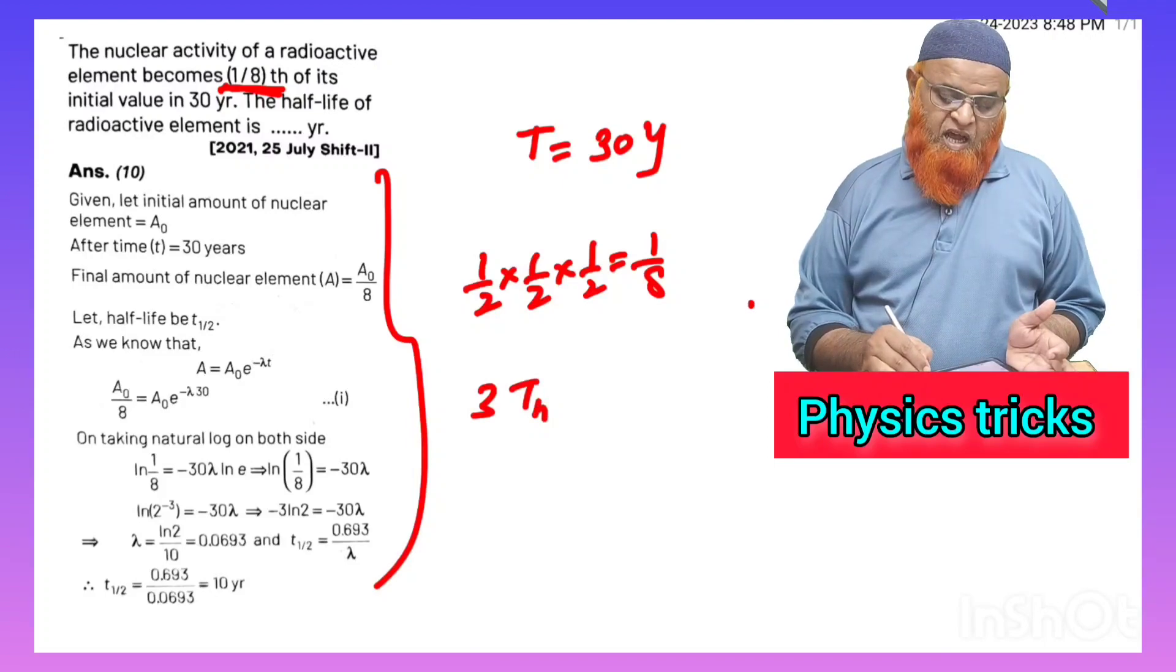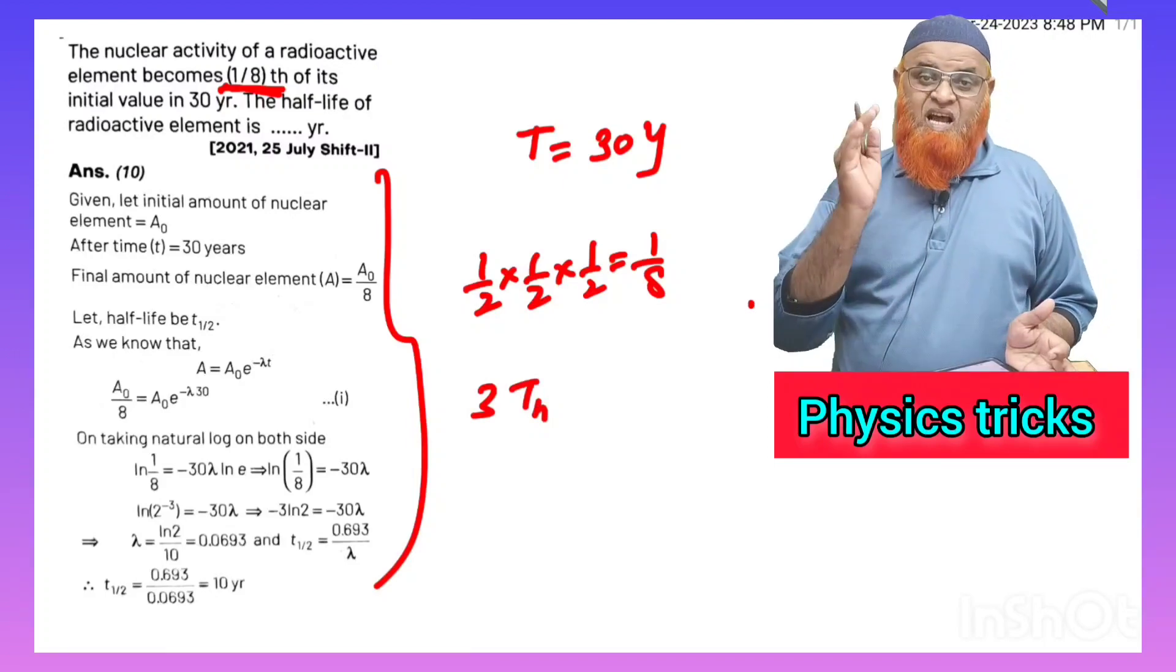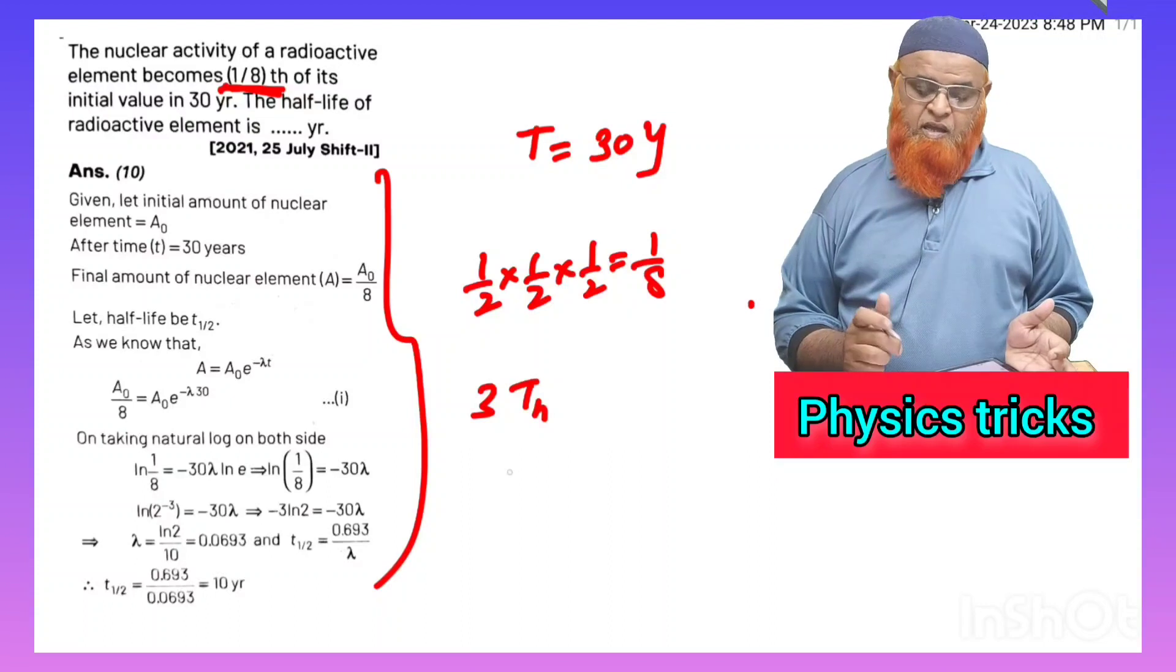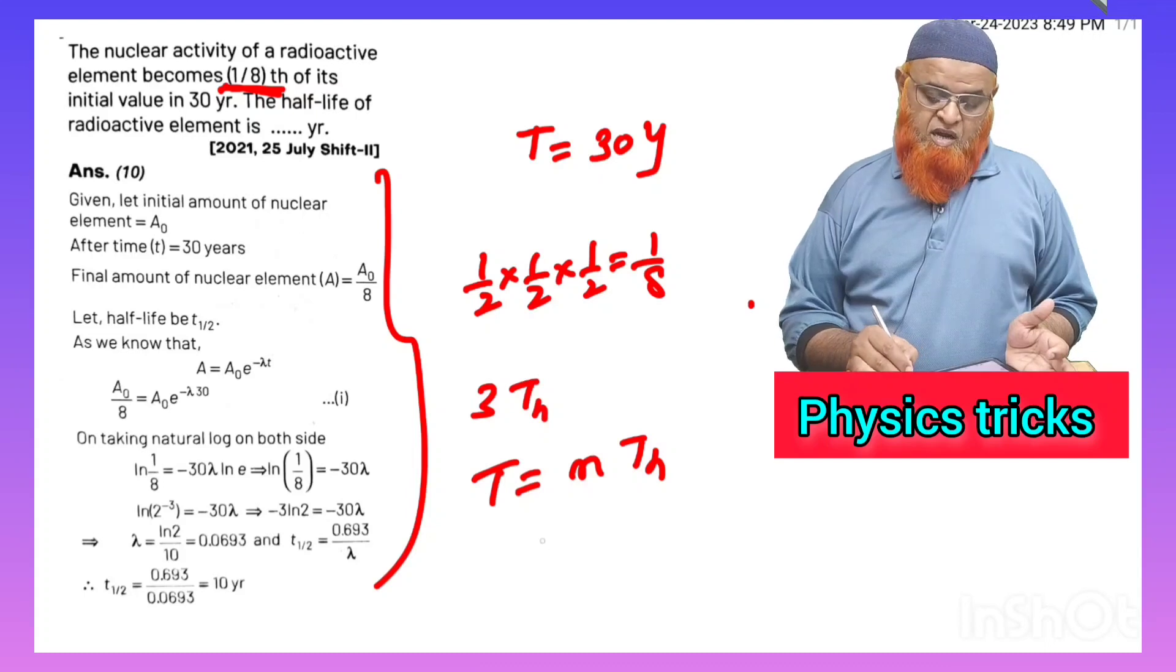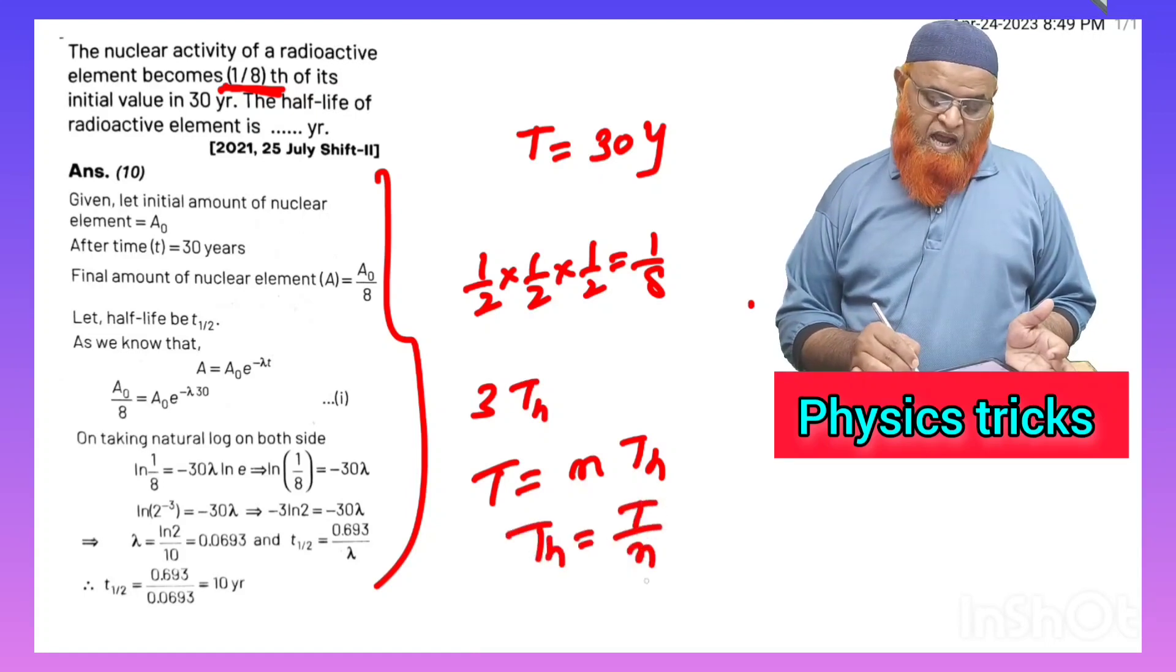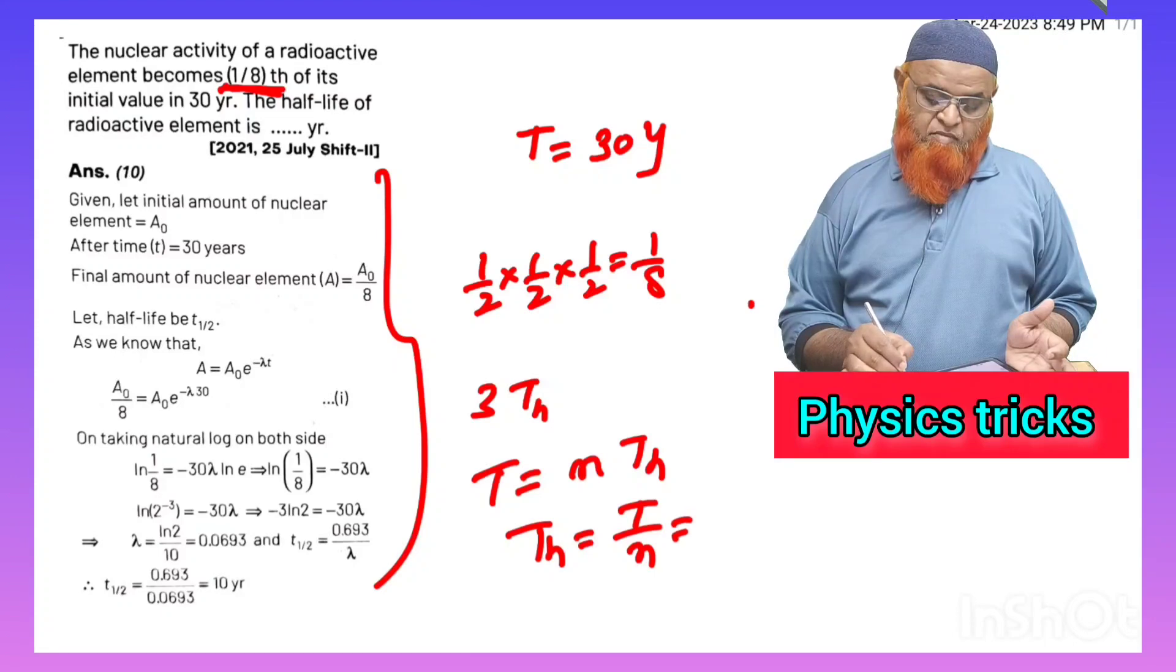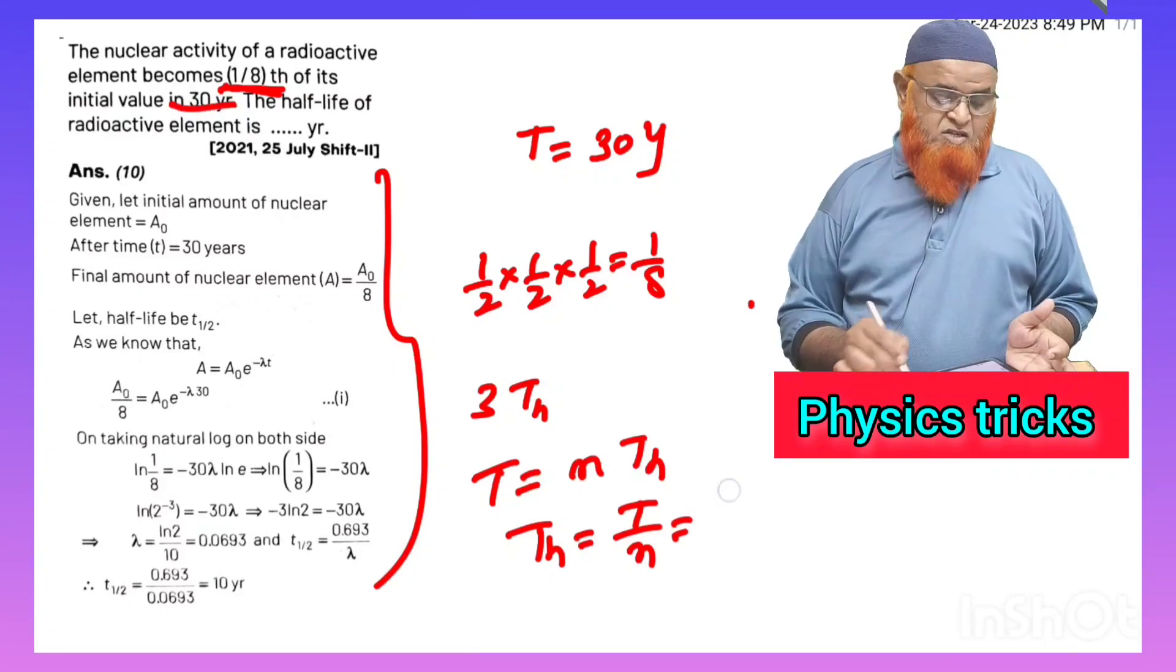So what is our formula? You know total time is equal to number of half-lives times half-life. So half-life is equal to total time divided by number of half-lives.